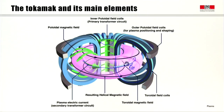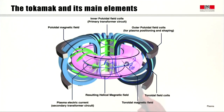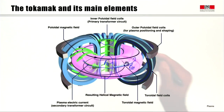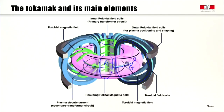The plasma current produces the poloidal magnetic field. The resulting magnetic field is helical because we have a toroidal field in the toroidal direction and a poloidal field. We see here in black the helical path of the field line. The third element is this gray structure wound around the tokamak — the outer poloidal field coils — used to control the plasma position and plasma shaping.